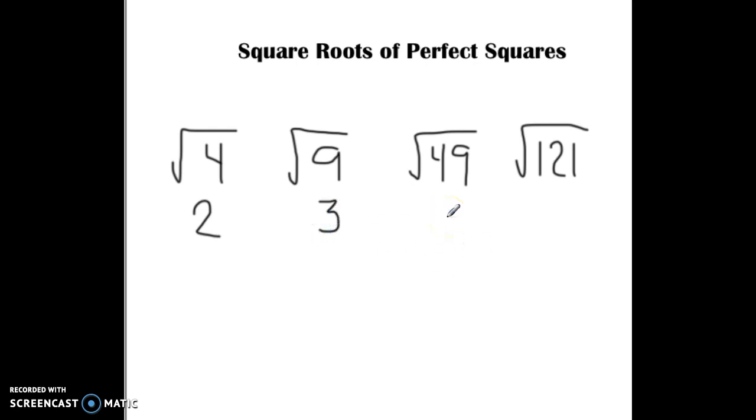Our next one's 49. Well, what would that be? Well, 7 times 7 is 49.